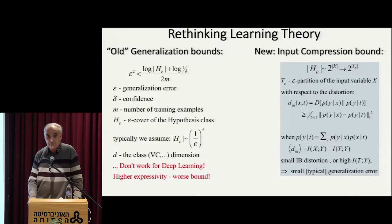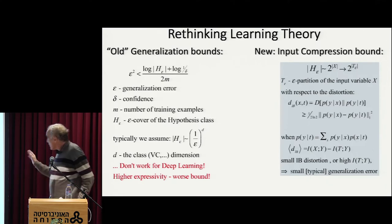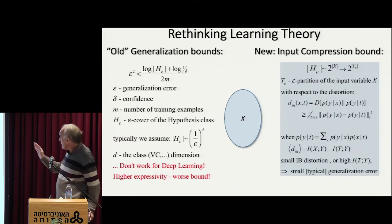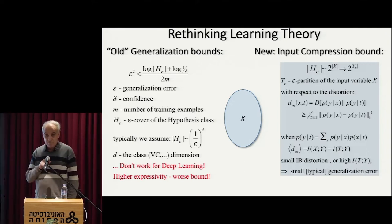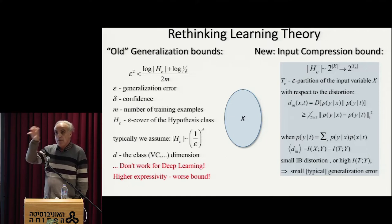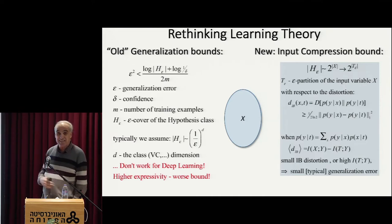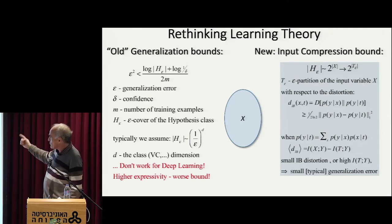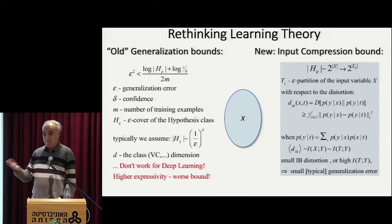This is the essence of learning theory today. The problem is that it doesn't seem to give us anything useful for this type of deep learning. My main idea was to move from the cover of the hypothesis class to a cover of the input — partition my data instead of the hypothesis — which will allow us to move from all possible functions to the two-to-the-cardinality of X. If I just start with all possible Boolean functions on X and X is finite, two to the cardinality of X gives me all the functions. If I plug this in the bound, I get nothing — I get what we call the no free lunch theorem.